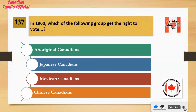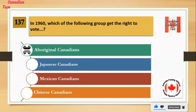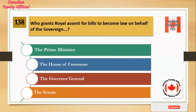In 1960, which of the following groups got the right to vote? Number 1: Aboriginal Canadians. Number 2: Japanese Canadians. Number 3: Mexican Canadians. Number 4: Chinese Canadians. And the answer is Aboriginal Canadians. Who grants royal assent for bills to become law on behalf of the Sovereign?